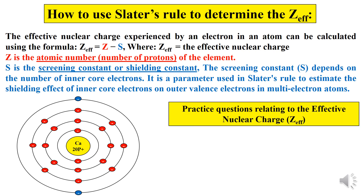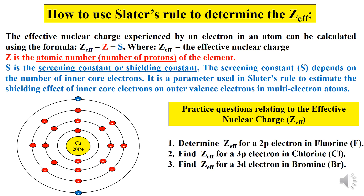Now it's time for some practice questions relating to effective nuclear charge. I will guide you through finding the answer for three questions and determine the Z-effective using Slater's rule: for a 2p electron in fluorine atom, a 3p electron in chlorine atom, and a 3d electron in bromine atom.